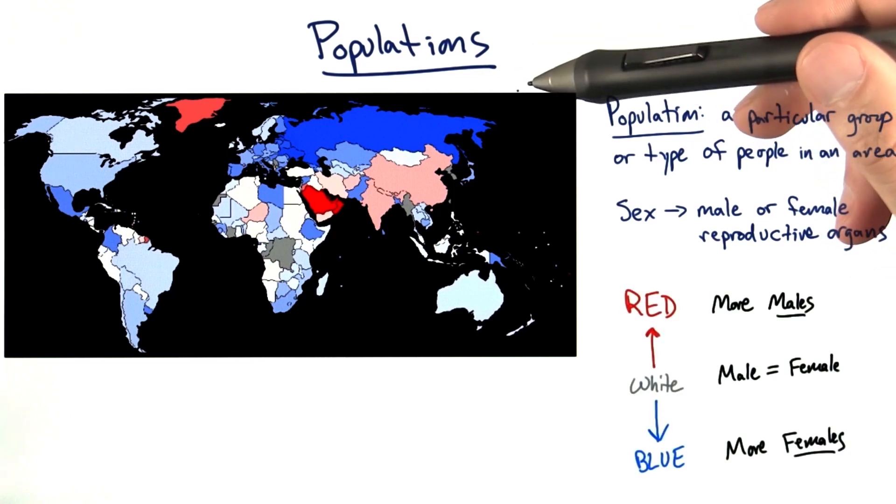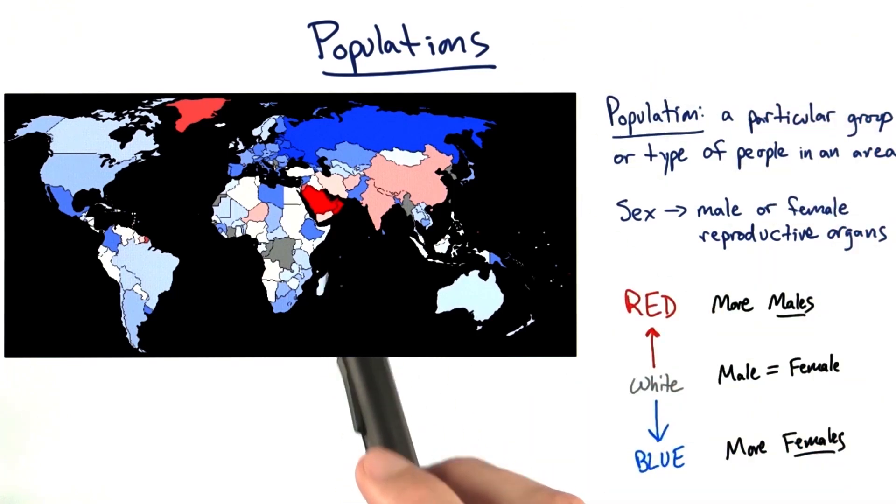In our world map here, the redder a country seems, the more males to females it has in its population. And the more blue a country appears, the more females to males you have in that country.